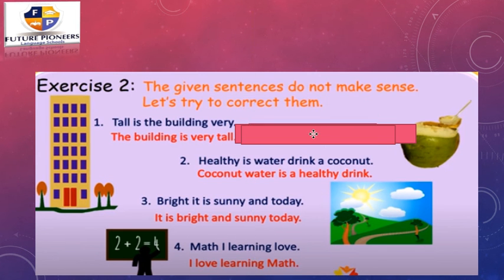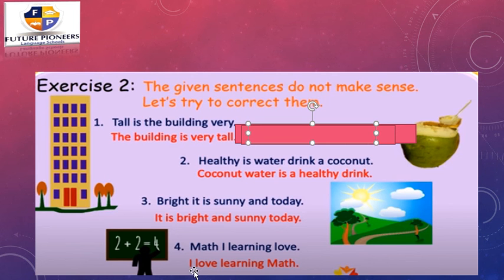What about the last one? 'Math, I learning love' — it doesn't make sense. Let's rearrange it to: I love learning math. Now it gives us a complete thought and makes sense. 'I' here is the capital letter as you can see, and we have a period at the end. 'I' is the subject and 'love' is the verb. It's correct — this is a sentence: I love learning math.